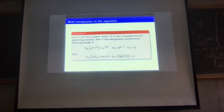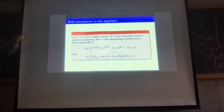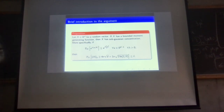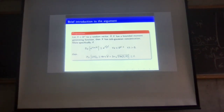In order to prove sub-Gaussian concentration, we use this proposition: if a random vector has a moment generating function that is bounded, then we have a sub-Gaussian concentration bound. So the idea for the proof of sub-Gaussian concentration is that we try to bound some moment generating function — not exactly the MGF of the distribution we're interested in, but a related symmetrized version.